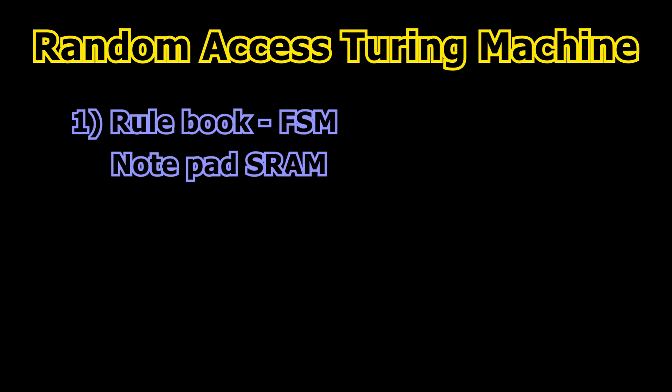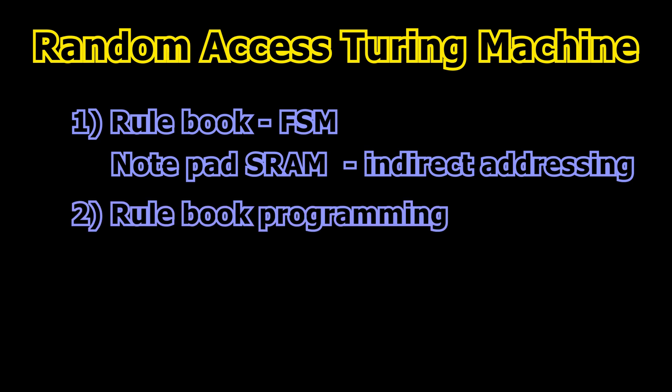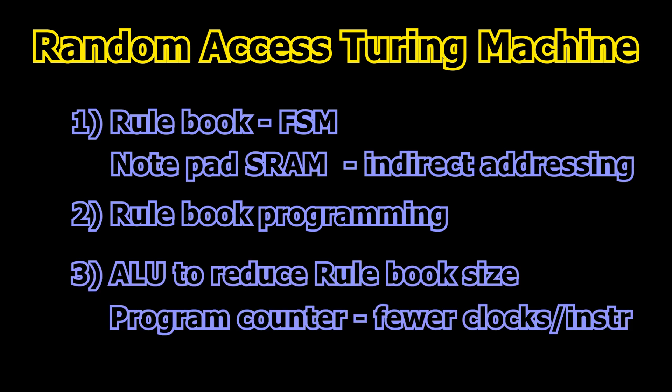Using a random access Turing machine will probably be very novel to many of you, but there are three levels to understanding this CPU. We have the basic Turing machine using the rulebook and notepad analogy. Then we expand the design to allow random access into the main memory. Level 2 is about understanding the code in the EEPROM of the rulebook. This determines whether we are emulating a 6502, a Z80 or some other microprocessor. In Level 3 we add extra functional units, an ALU module to reduce the size of the rulebook, and a program counter to reduce the number of clocks per instruction.